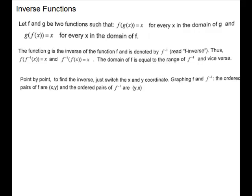So f of f inverse of x is equal to x, and f inverse of f of x is equal to x. The domain of f is equal to the range of f inverse, so your x's and y's switch in inverse functions. Point by point, to find the inverse, just switch the x's and y's.